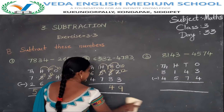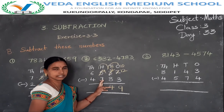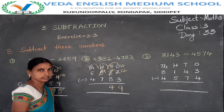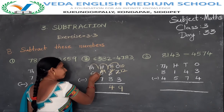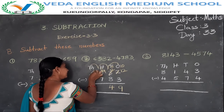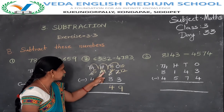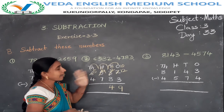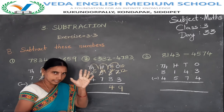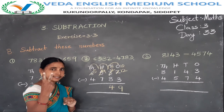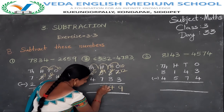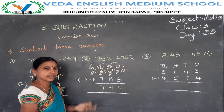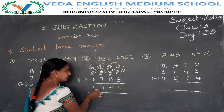Understood. In the tens place, 2 minus 8 is not possible. So take a borrow from the hundreds place to the tens place: 10 plus 2 gives 12. The hundreds place had 500 but one hundred has gone to the tens, so it becomes 400 — 5 becomes 4. 12 minus 8: backward counting gives 4. Then hundreds place: 4 minus 7, not possible, so take borrow from thousands place — 4 becomes 14. 14 minus 7 is 7. Thousands place: 5 minus 4 is 1. The difference is 1749.